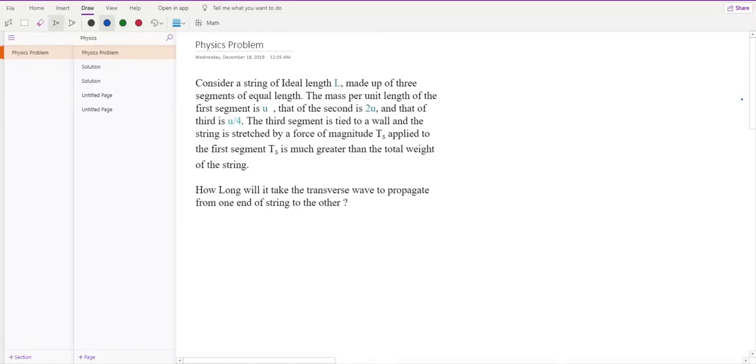Hi friends, today we'll be solving another physics problem which states: consider a string of length L made up of three segments of equal length. The mass per unit length of the first segment is mu, that of the second is two mu,